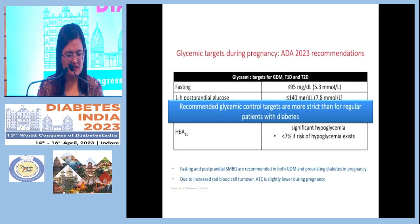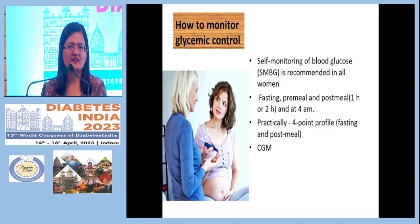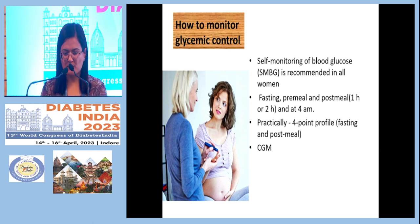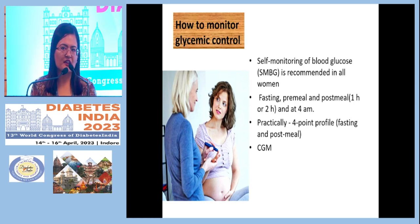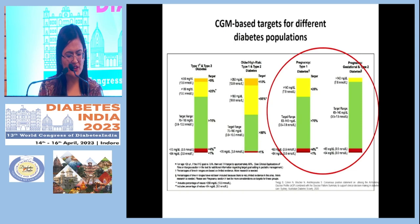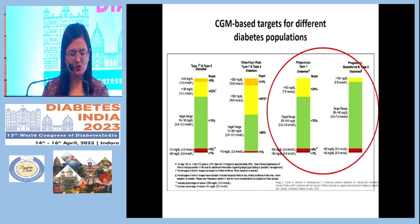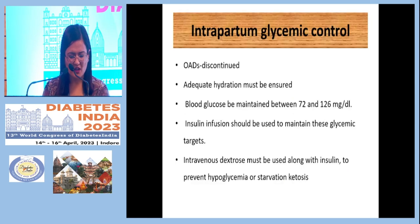Glycemic monitoring can be done with self-monitoring of blood glucose — fasting, pre-meal, post-meal, and late night at 2 AM to detect hypoglycemia. Continuous glucose monitoring (CGM) data exist for type 1 diabetes in pregnancy, but not for type 2 or gestational diabetes. In type 1 pregnancy, CGM targets recommend more than 70% of time within 63–140 mg/dL.